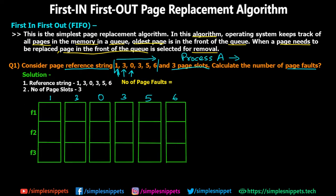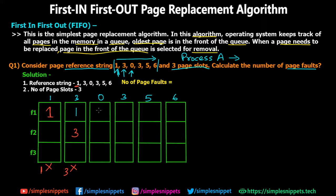For the first iteration, page 1 is requested. It is not in any of the three frames, so a page fault occurs — this is the first page fault. Page 1 is loaded into memory. For the second iteration, the CPU wants page 3. Page 1 is there but page 3 is not, so a second page fault is generated and page 3 is loaded. For the third iteration, page 0 is requested. It is not in the frames either, so a third page fault occurs and page 0 is loaded.